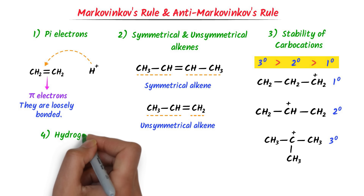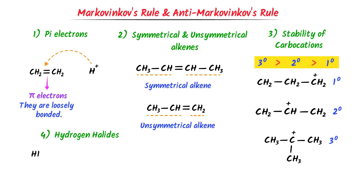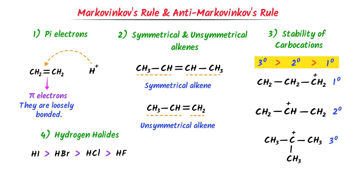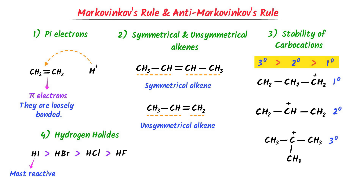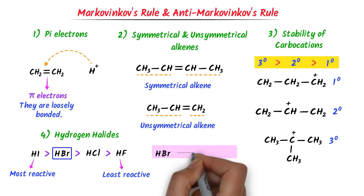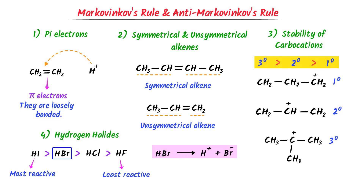Lastly, understanding the hydrogen halides — like hydrogen iodide, hydrogen bromide, hydrogen chloride, and hydrogen fluoride. Remember that this is the order of reactivity of hydrogen halides. Hydrogen iodide is the most reactive because it easily breaks, while hydrogen fluoride is the least reactive because we need high energy to break its bond. In Markovnikov's rule, we usually take hydrogen bromide. When we break the bond of hydrogen bromide, we get positive hydrogen and negative bromine.